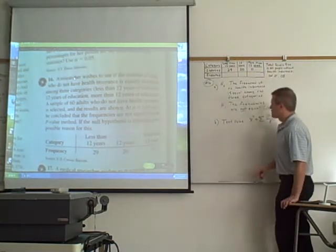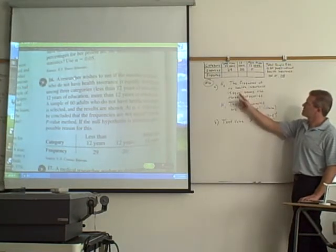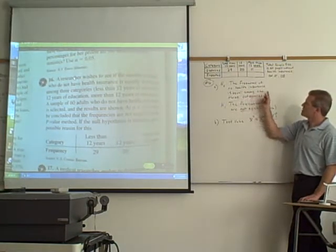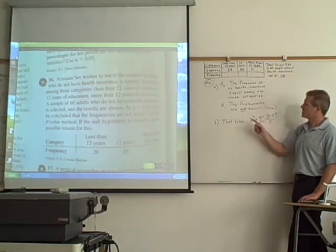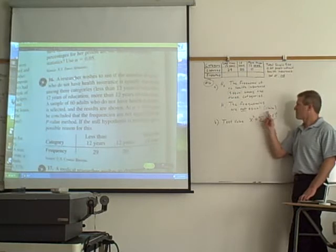So here's our null: the frequency of no health insurance is equal among the three categories. The alternative would be the frequencies are not equal. And that's the claim.